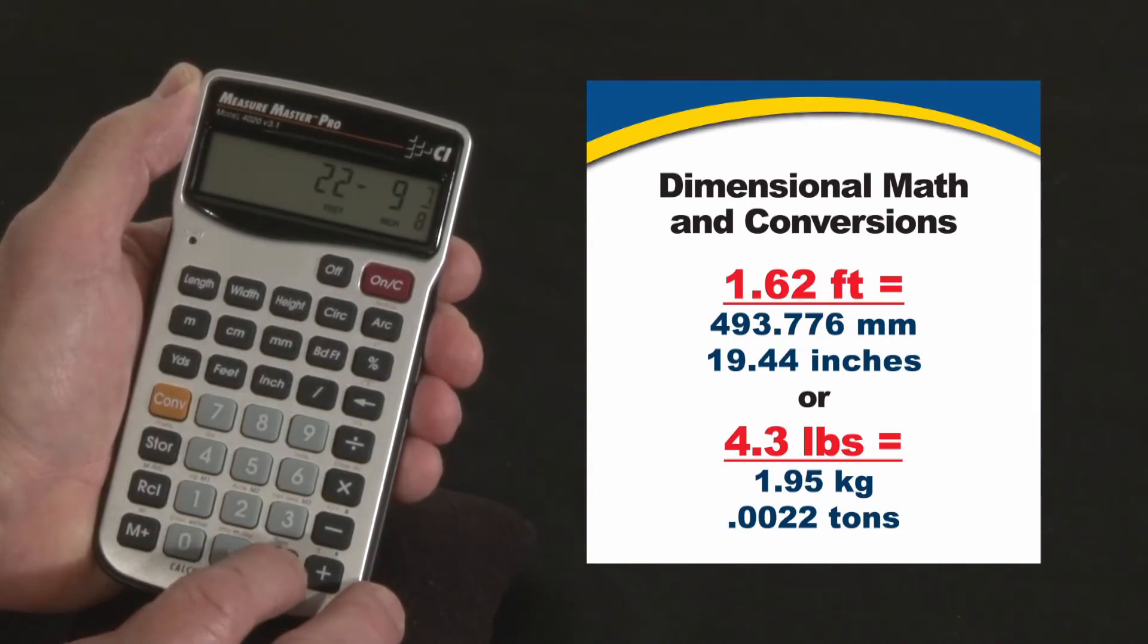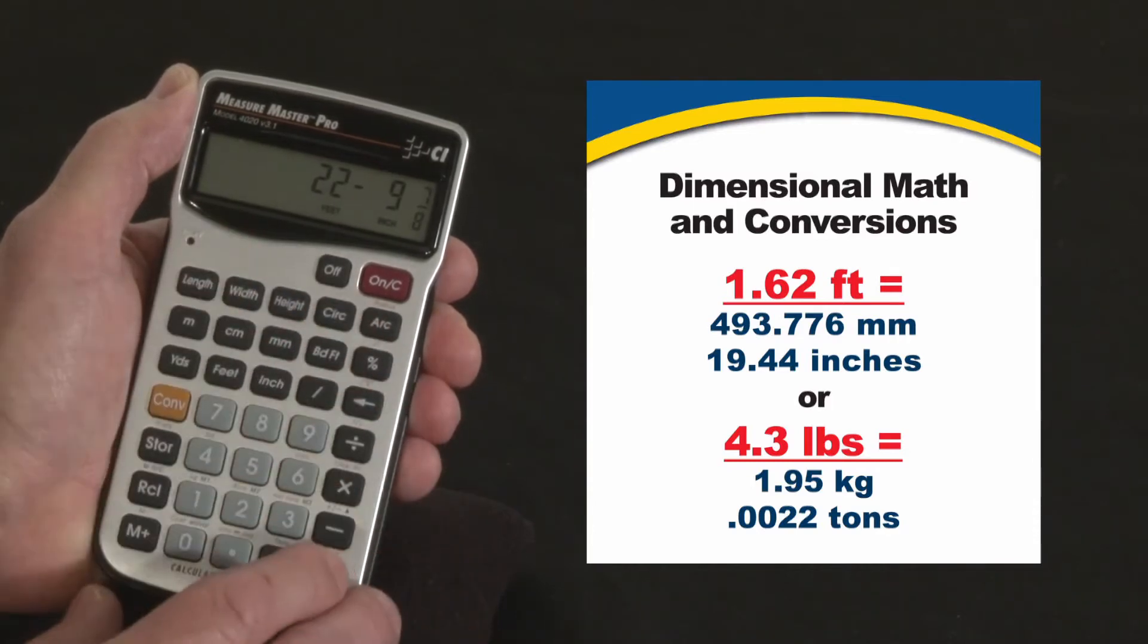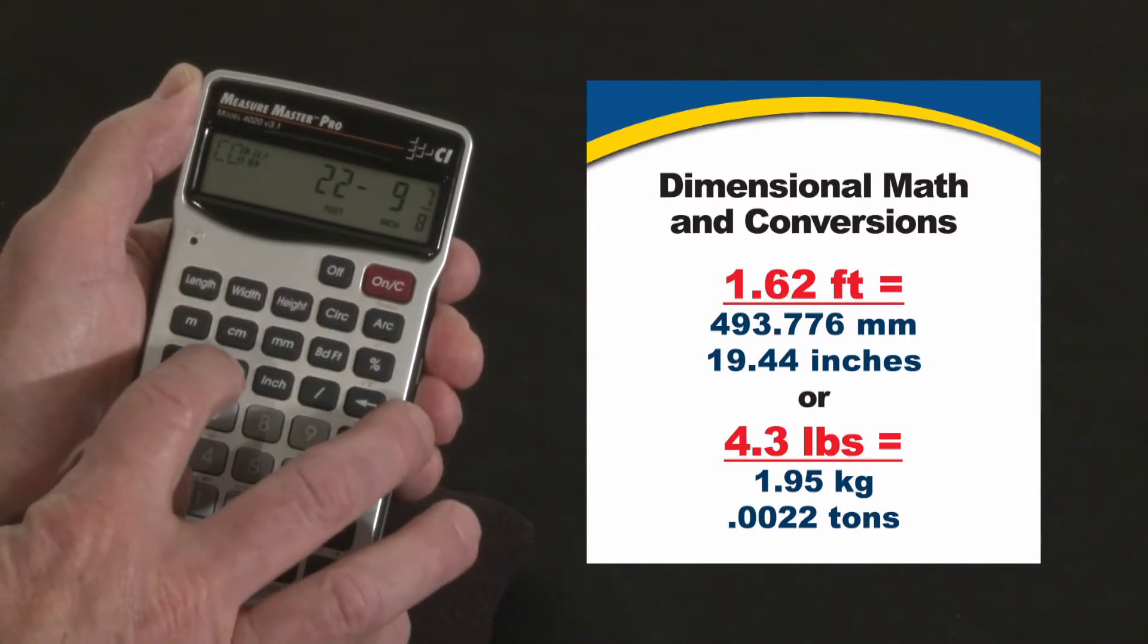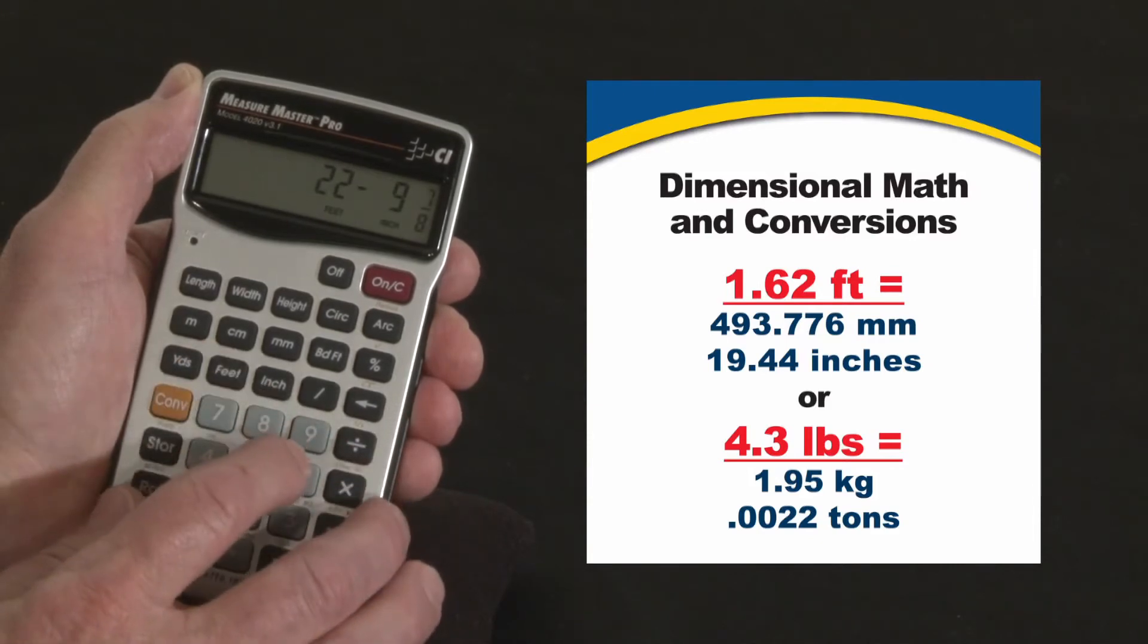You hit the equals key and it comes back in the format that we first started with, the feet, inch, fractions. But if you don't like that, you can convert to feet, decimal, back to feet, inch, fractions.